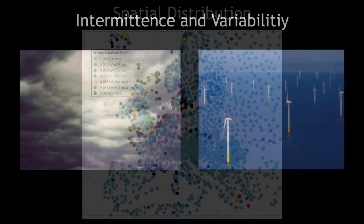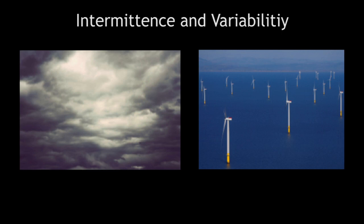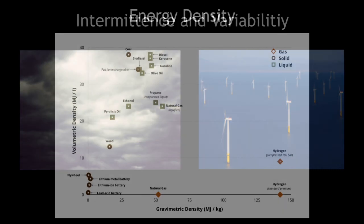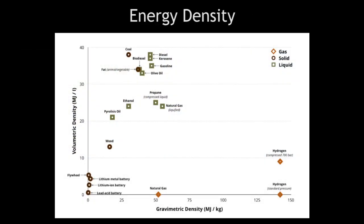Another major energy property is intermittence and variability. The sun doesn't always shine, the wind doesn't always blow, yet our industrial systems are conditioned to have 24/7 access to electricity. So the stochastic nature of weather ends up being an important energy property.